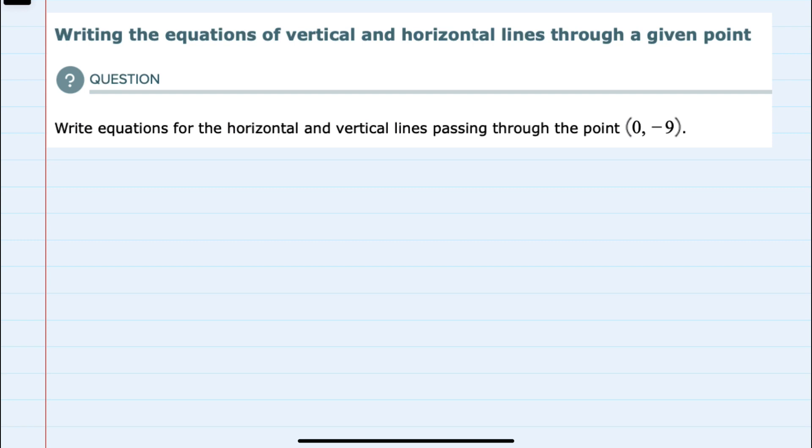We're asked to write the equations for both horizontal and vertical lines going through the point (0, -9). I'll start by looking at where that point is in the plane.